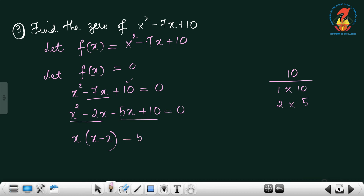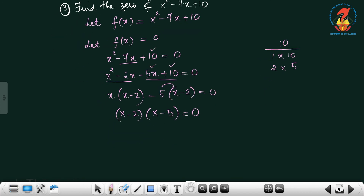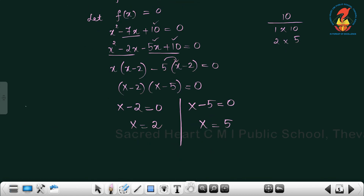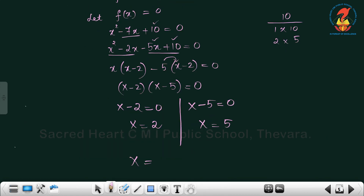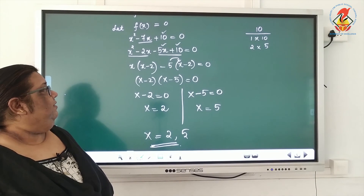Now pairing and taking common terms: x(x − 2) − 5(x − 2) = 0, so (x − 2)(x − 5) = 0. That means x − 2 = 0 or x − 5 = 0, giving x = 2 or x = 5. So the zeros of the polynomial x² − 7x + 10 are 2 and 5.